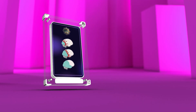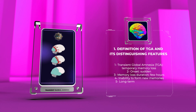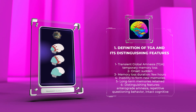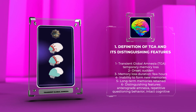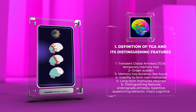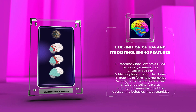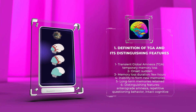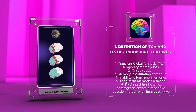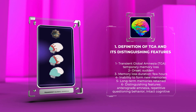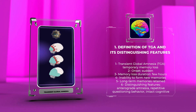Transient global amnesia, commonly referred to as TGA, is a temporary neurological disorder characterized by the sudden onset of memory loss, typically lasting for a few hours. During a TGA episode, individuals experience an inability to form new memories but retain their long-term memories intact. Distinguishing features of TGA include the abrupt onset of anterograde amnesia, repetitive questioning behavior, intact cognitive functions, and the absence of any other focal neurological deficits.